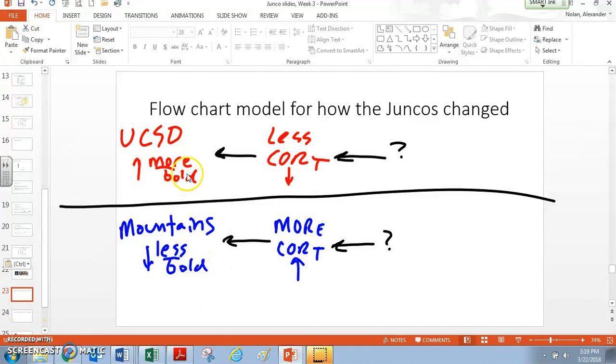What I've indicated here is that our CORT levels are what is going to affect our boldness. They have opposite effects. Like we said, it's actually a negative correlation. So we see the less CORT, the more bold. The more CORT, the less bold.